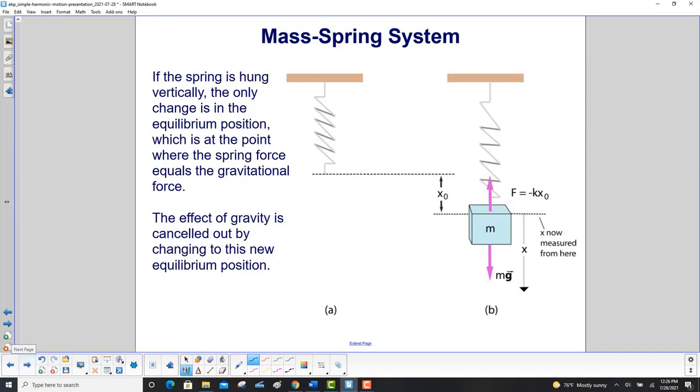Now let's make a vertical mass spring system. The only change will be the equilibrium position, which is at the point where the spring force equals the gravitational force. Here's gravity. So if we just lower it down and do it very gently and then stop holding it, it will stay there. So gravity is pulling it down. Hooke's law, the spring force is trying to pull it up. So this displacement from the original position here when there was no mass on it is x zero. So you have minus kx zero is equal to mg. And going forward, if I let it rest there and then pull the mass down, I measure all distances from this new distance here. So the effect of gravity is canceled out by changing to this new equilibrium position. Of course, gravity is still there. It's just being balanced by the spring force.